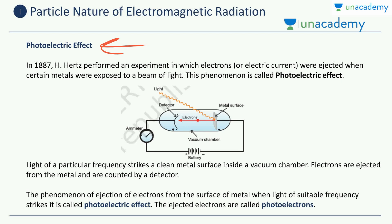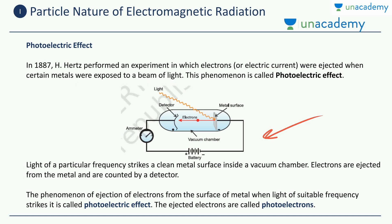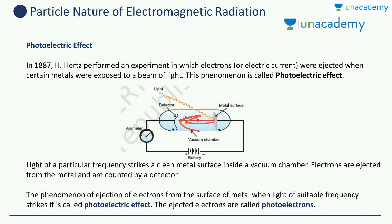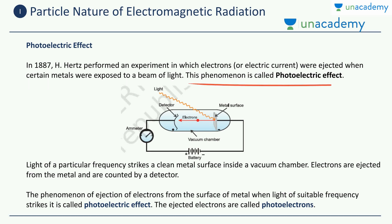In 1887, Mr. Hertz, a very accomplished scientist, performed an experiment in which electrons or electric current were ejected when certain metals were exposed to a beam of light. This is the apparatus Hertz used — a metal surface which he bombarded with light beams. These are external light beams projected onto the metal surface. He observed that electrons were flowing out of the metal surface because of the incidence of external light. Electrons or electric current were ejected when certain metals were exposed to the beam of light, and this phenomenon is known as the photoelectric effect.